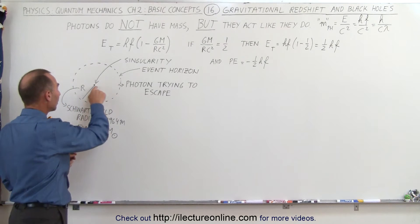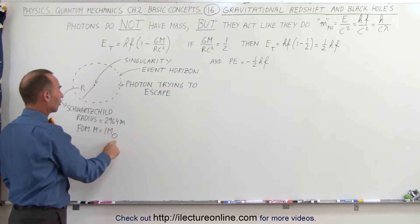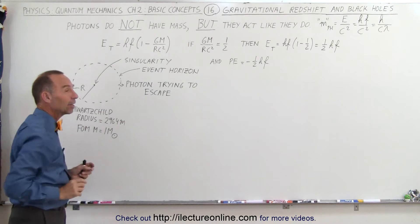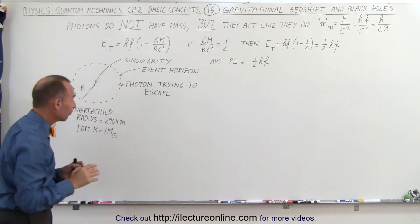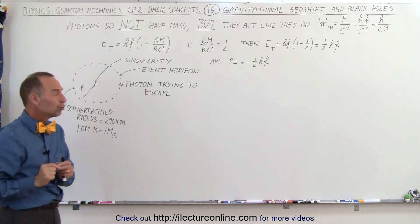And for a mass in the black hole equal to one times the mass of the Sun, the radius is calculated to be 2,964 meters, just shy of two miles.